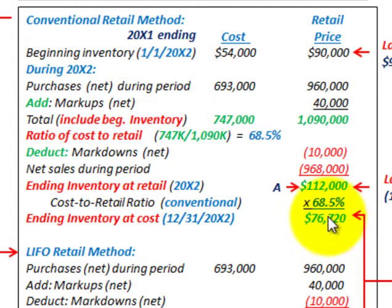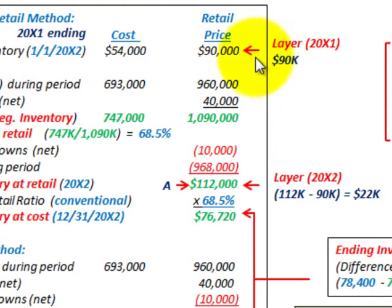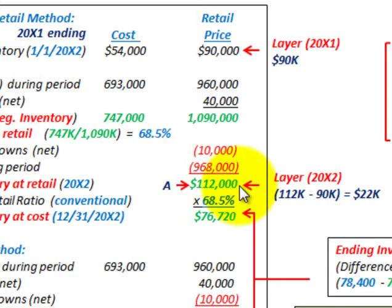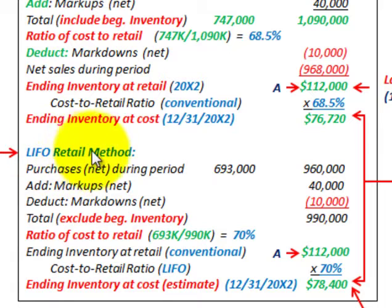Now we've determined ending inventory using the conventional retail method. For the LIFO retail method, we have two layers of inventory: the beginning layer from 20X1 of $90,000 and a new layer added in 20X2. Since we started at $90,000 and ended at $112,000, we added $22,000 of inventory — that's our 20X2 layer. Now we need to determine ending inventory using the LIFO retail method.